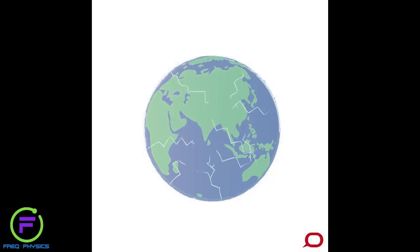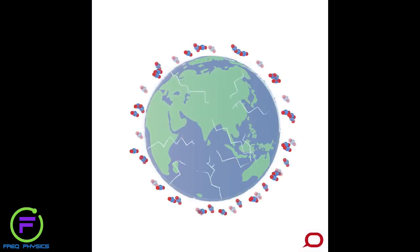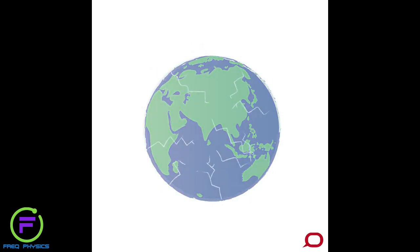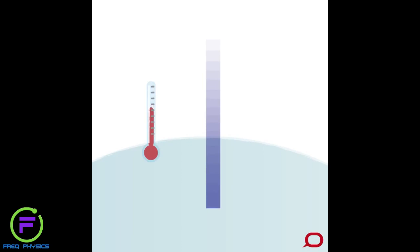We know from the geological record that natural changes in carbon dioxide levels have directly related to past increases and decreases in global temperatures. Scientists use ice core records from Antarctica to reconstruct prehistoric temperature records.